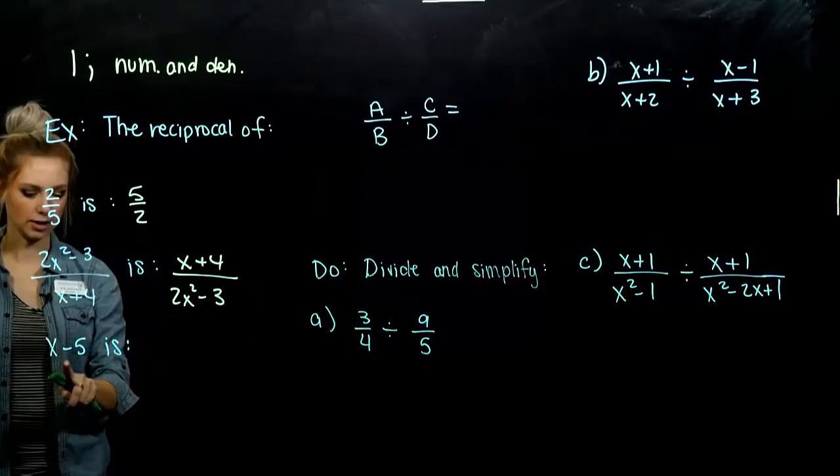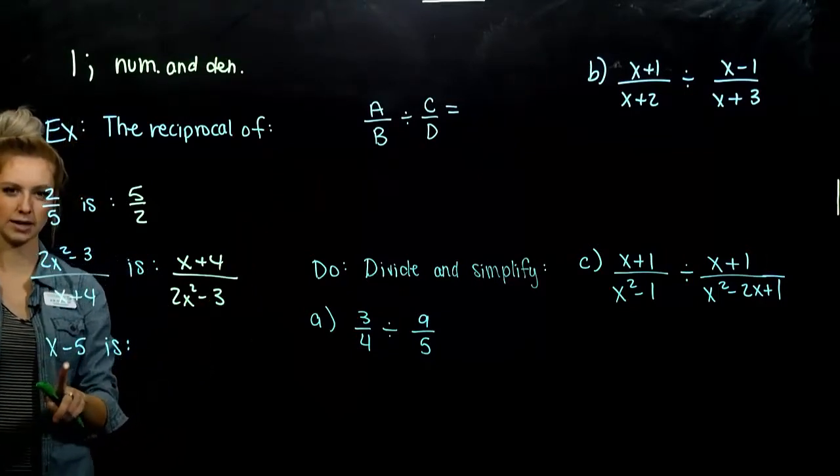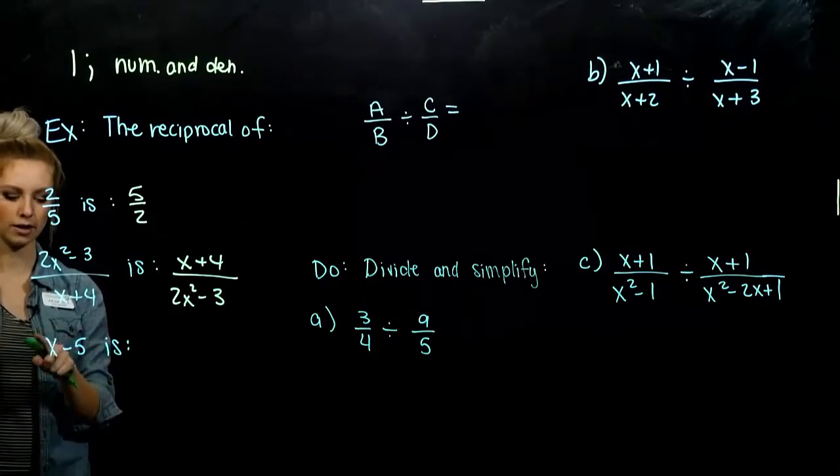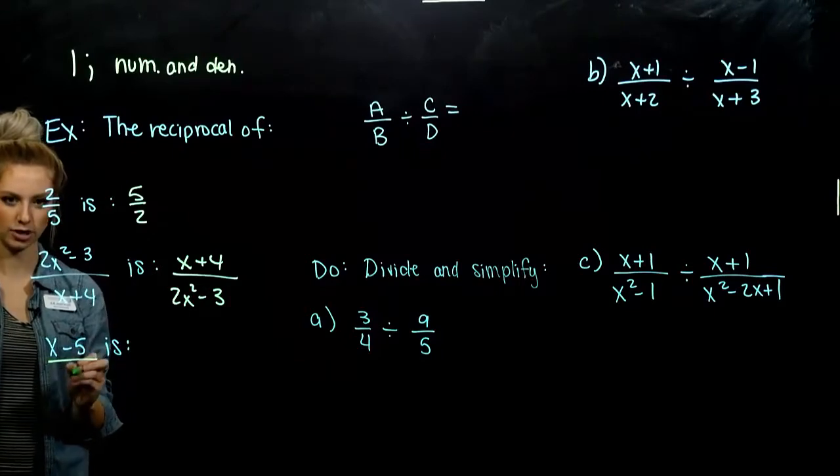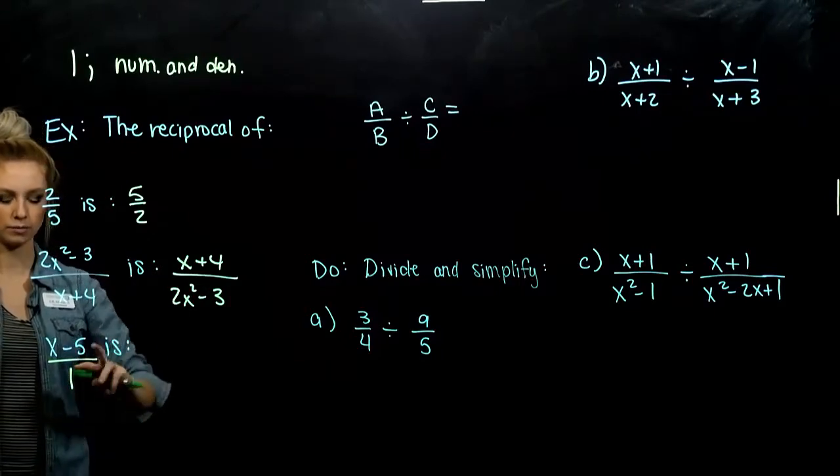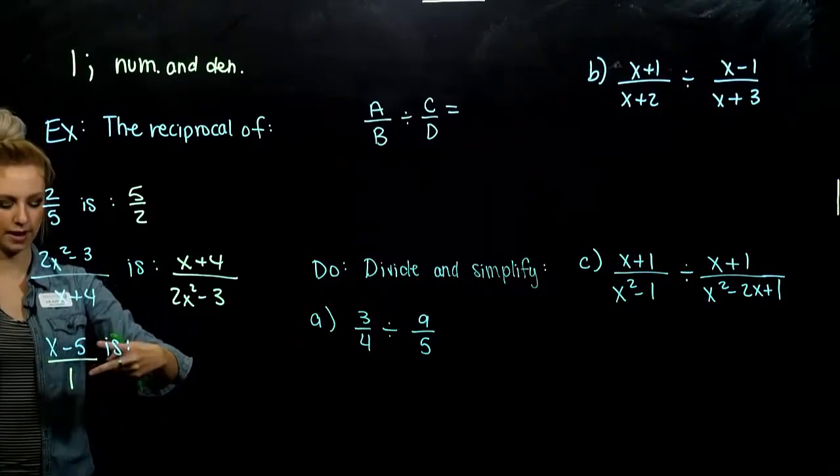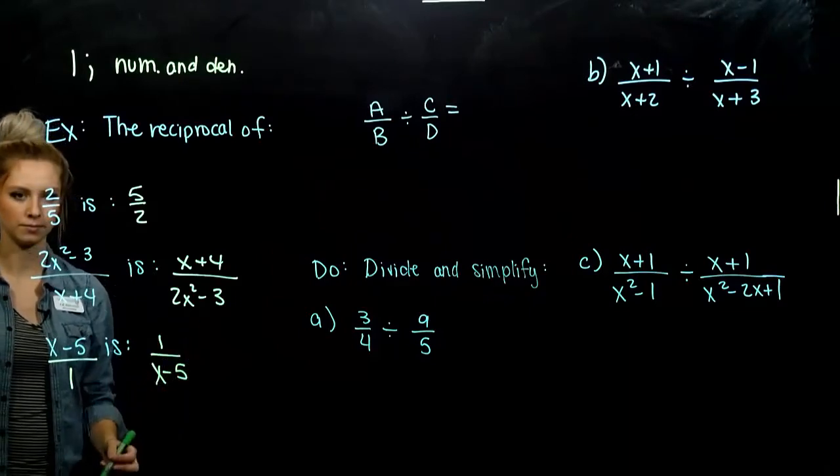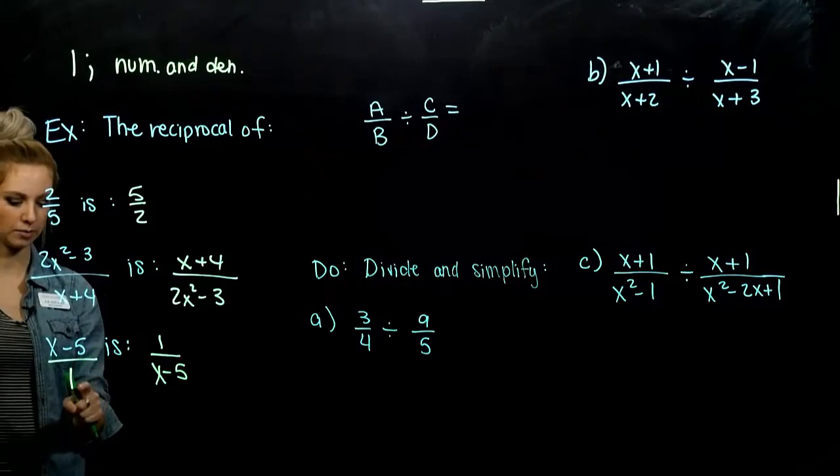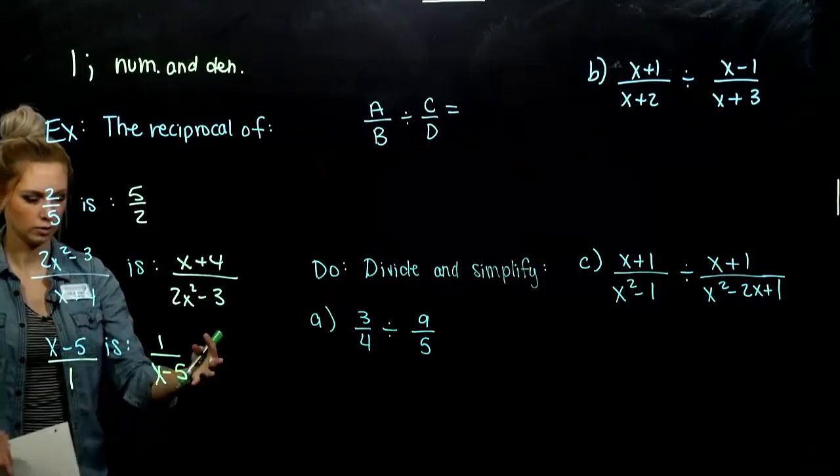And down here, I don't have a denominator right now, but how could I rewrite this polynomial as a rational expression? As a fraction, I can put it over 1. So when I look at the reciprocal of x minus 5, it's 1 over x minus 5. And again, you can see if we multiply them together, everything cancels out. We get out 1.